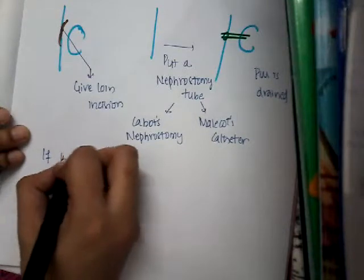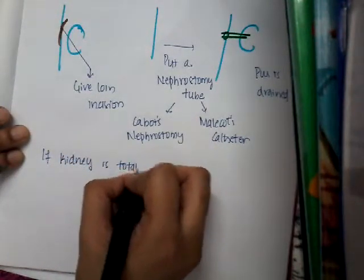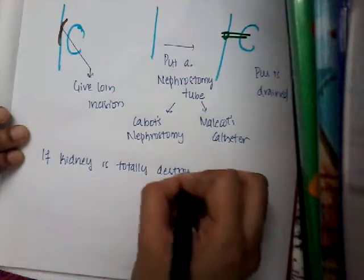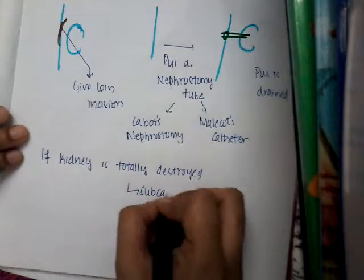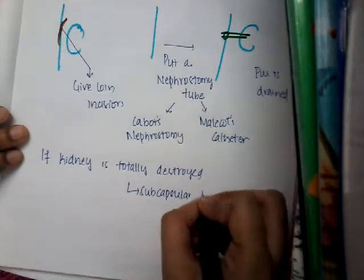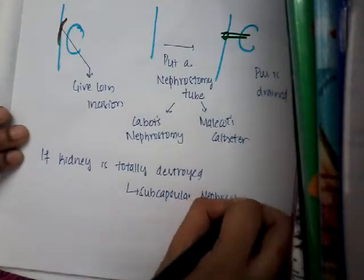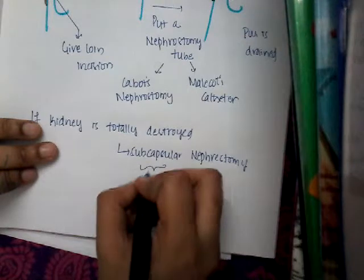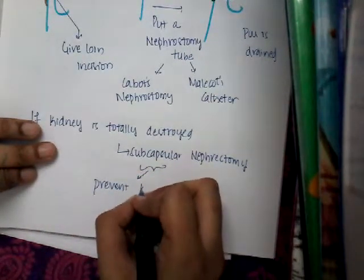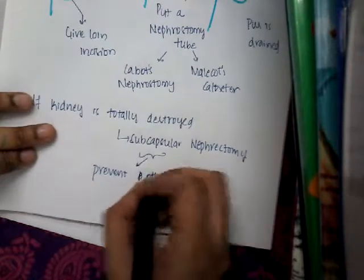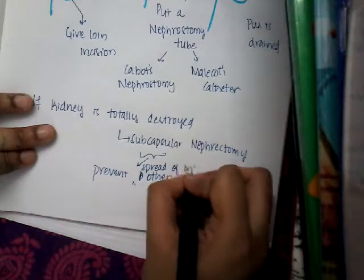If the kidney is totally destroyed, then you can do a subcapsular nephrectomy. Why subcapsular? Because this prevents spread of infection to the other kidney.